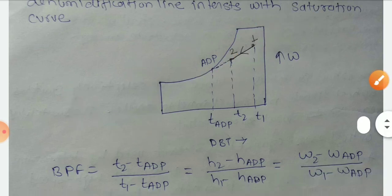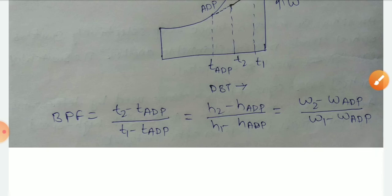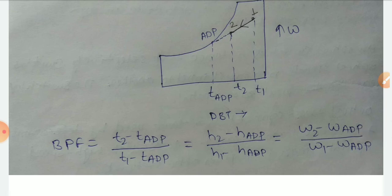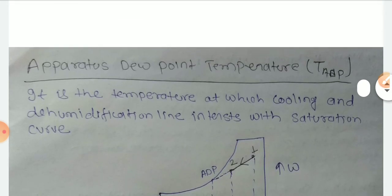You can write W2 minus WADP divided by W1 minus WADP. WADP is the apparatus dew point temperature. Thank you.